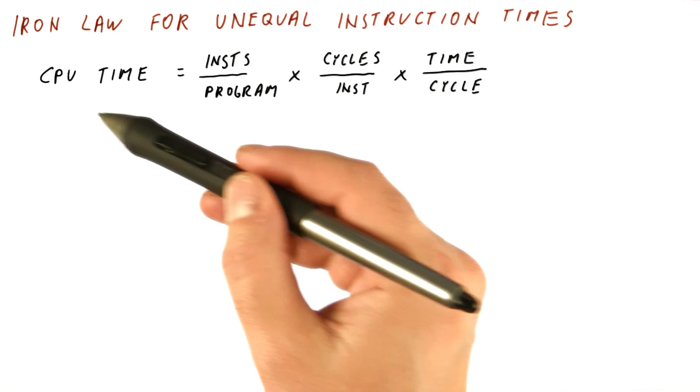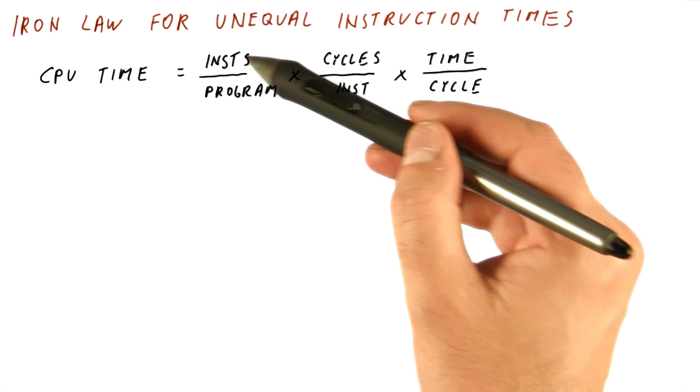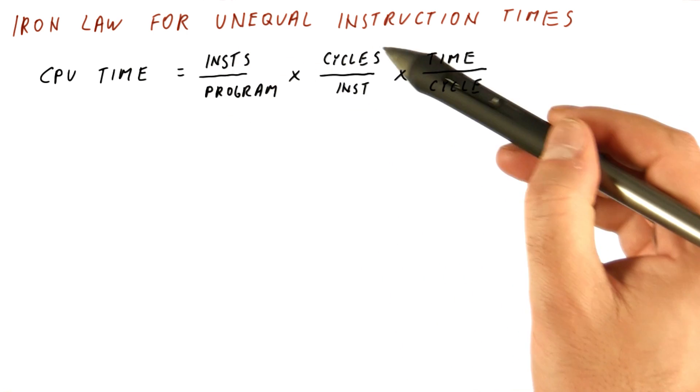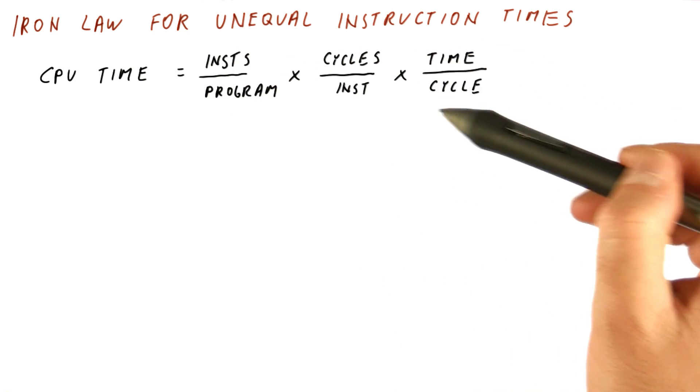So this is our original iron law of performance, the number of instructions per program times the number of cycles per instruction times the clock cycle time.